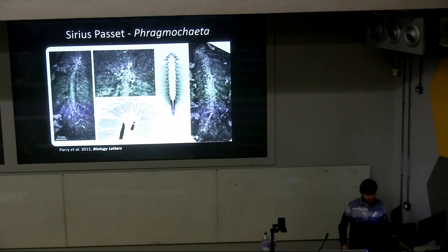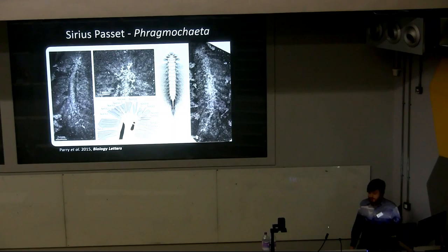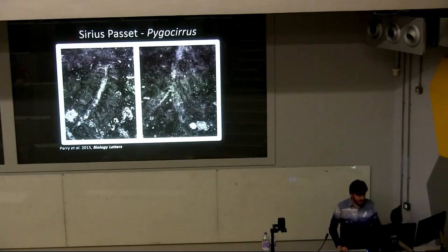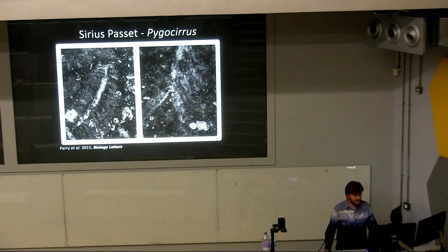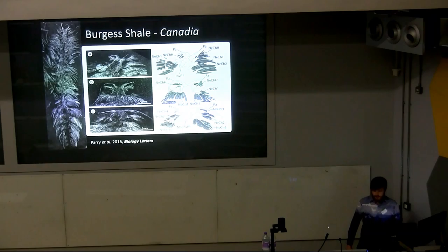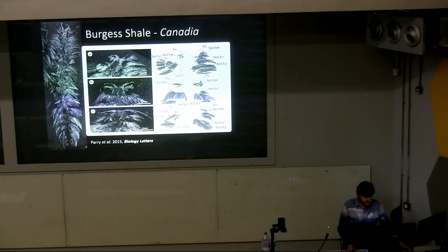The first taxon is Phragmochaeta, originally described by Simon Conway Morris and John Peel in 2008. It's divergent from the archetypal polychaete body plan in that it lacks any appendages around the head and is entirely covered by bristles. It appears to lack the pre-segmental head region seen in extant annelids. Pygocirrus is the second taxon from Sirius Passet — the only known annelid taxon with paired sensory appendages on the pygidium, which may be an important apomorphy of crown annelids.